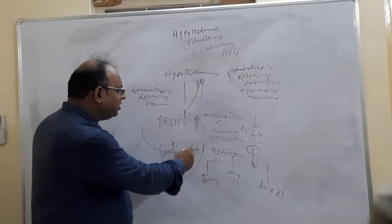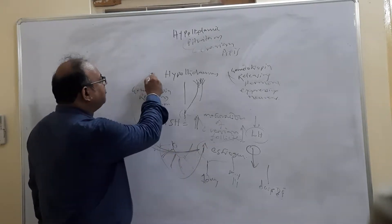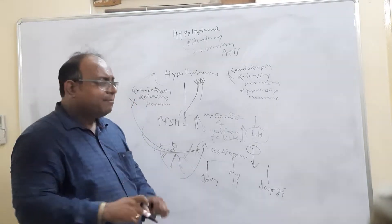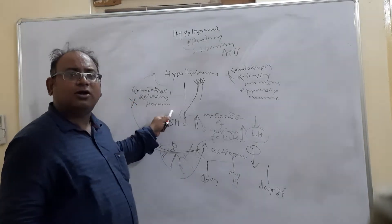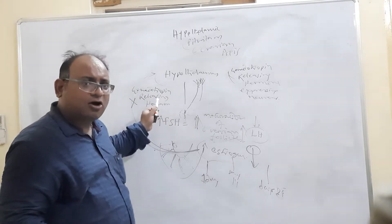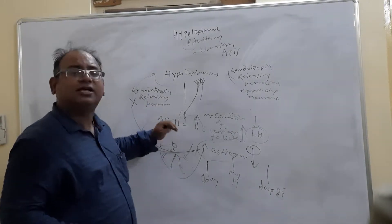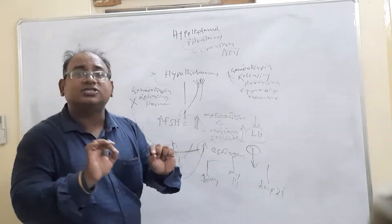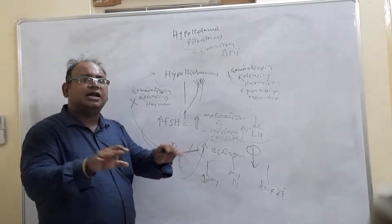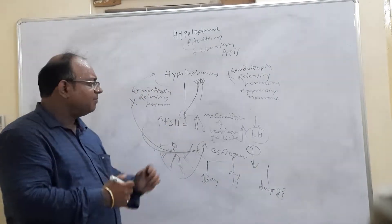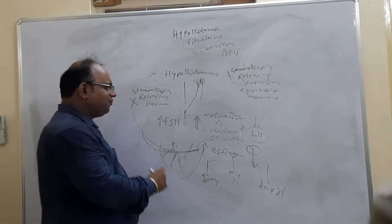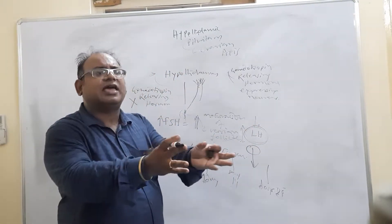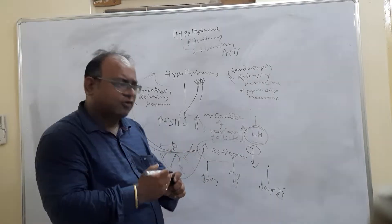At the same time, estrogen gives a negative feedback to the hypothalamus to stop the production of gonadotropin-releasing hormone. If the release of gonadotropin-releasing hormone is not stopped, more follicle-stimulating hormone will be produced and there will be more production of estrogen, which is not necessary. A balance must be maintained within this axis.